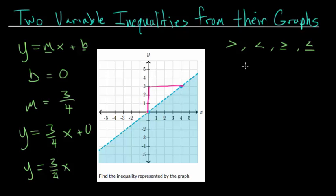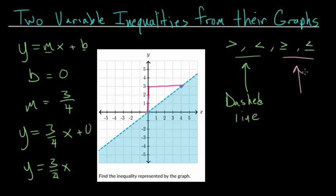If it's a dashed line, we're looking at strict inequalities — greater than or less than. A dashed line means the line itself is not included in the solution of the inequality. But if the line is solid, then we're dealing with greater than or equal to or less than or equal to, meaning the line itself is part of the solution set. And if you shade below the line, we're dealing with less than or less than or equal to.